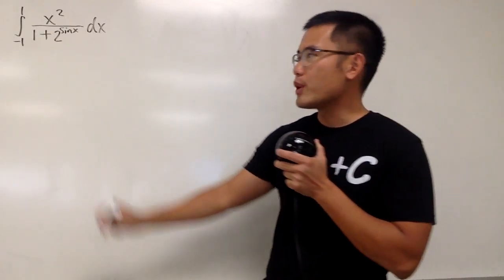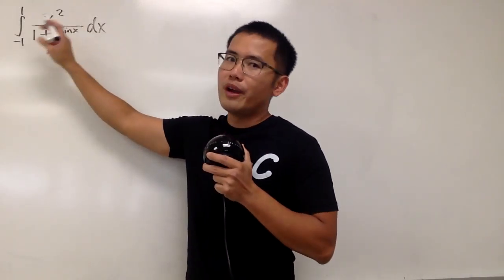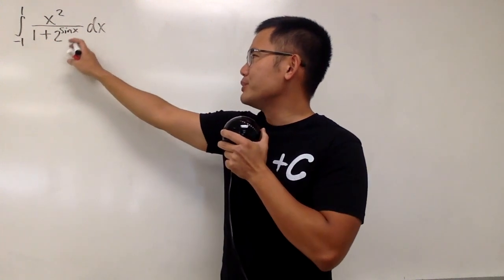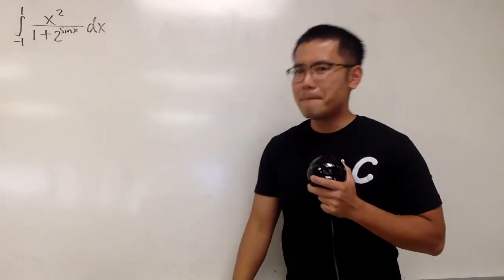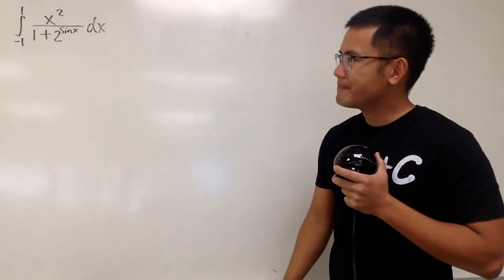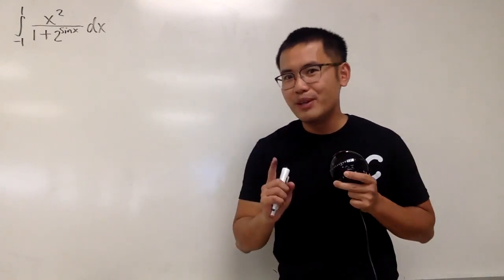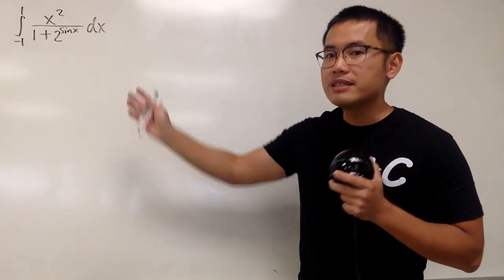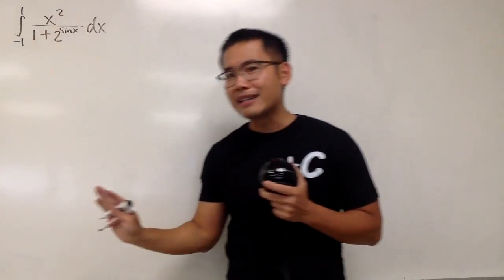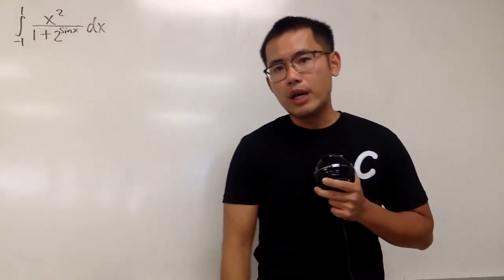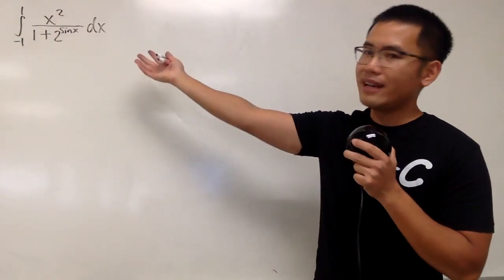Here's the integral for you guys. We have to integrate from negative 1 to 1 of x squared over 1 plus 2 to the sine x power. First of all, let me tell you guys that the answer to this integral is not 0, because this right here is not odd. But anyway, as always, please pause the video and try this first.